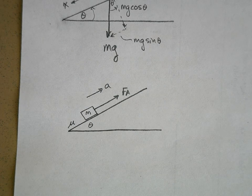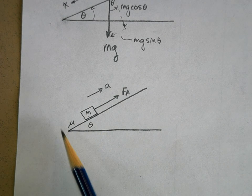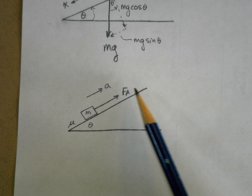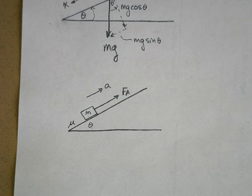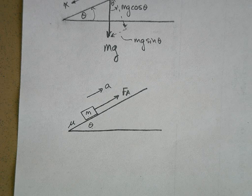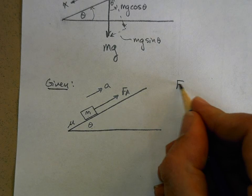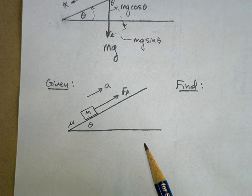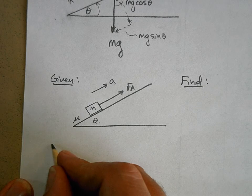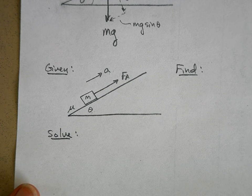All the inclined plane problems I give you will be variations on this theme. I'll show you how to set this problem up using the procedure we've been discussing. For example, I might give you the acceleration, mass, applied force, and angle, and you find the coefficient of friction — or I give you the angle, mass, and coefficient of friction and you find the applied force. The procedure will handle whatever is given and whatever you're trying to find.